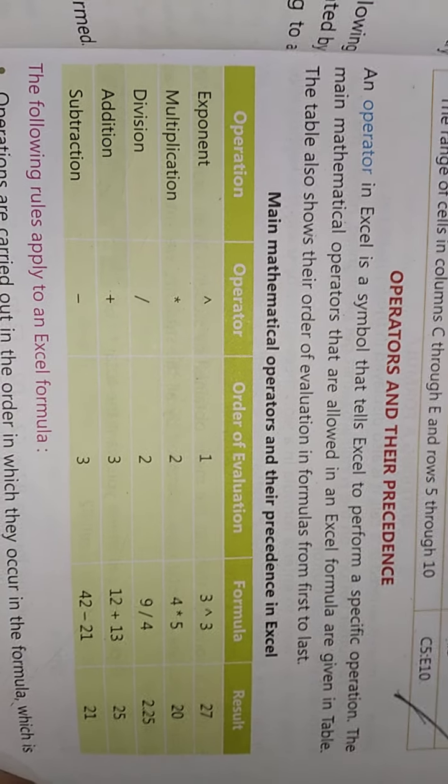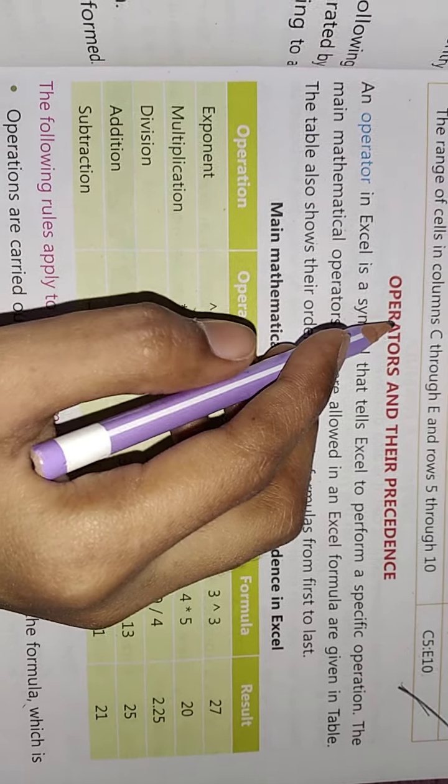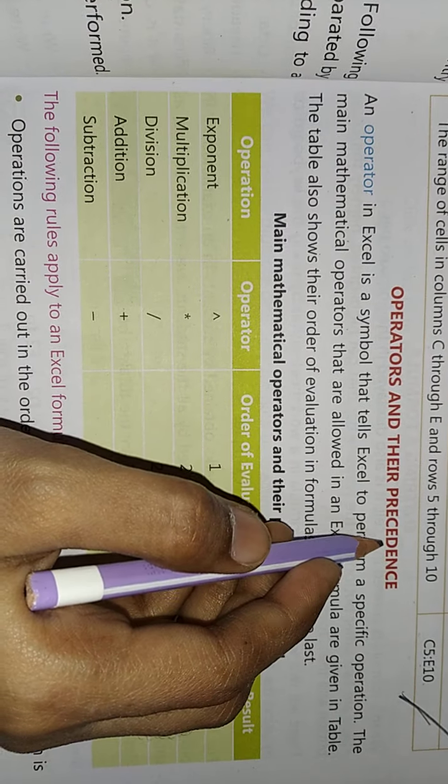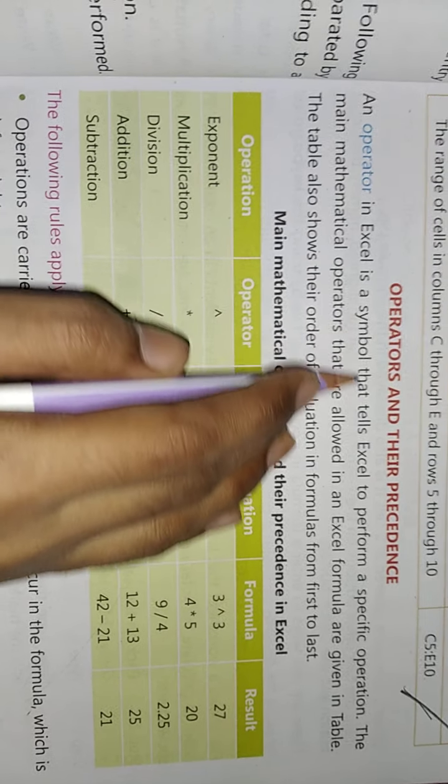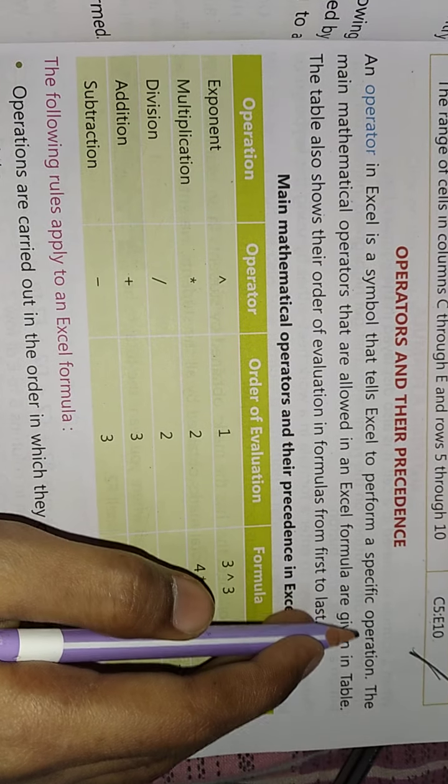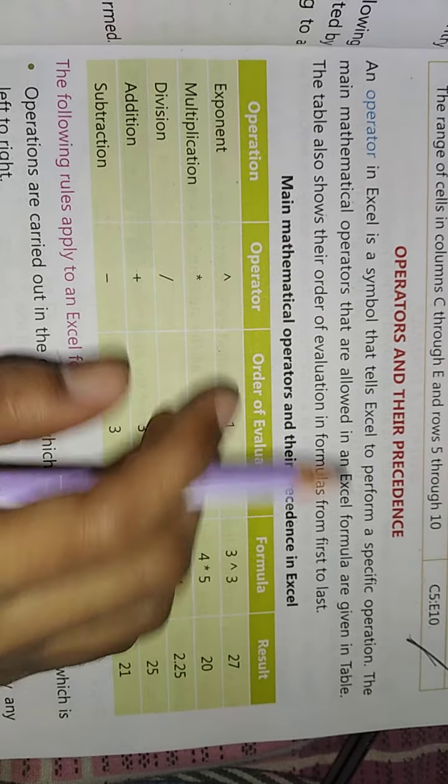Good morning class, this is your second lecture of chapter number two. Today we will start with operators and their precedence. An operator in Excel is a symbol that tells Excel to perform a specific operation.